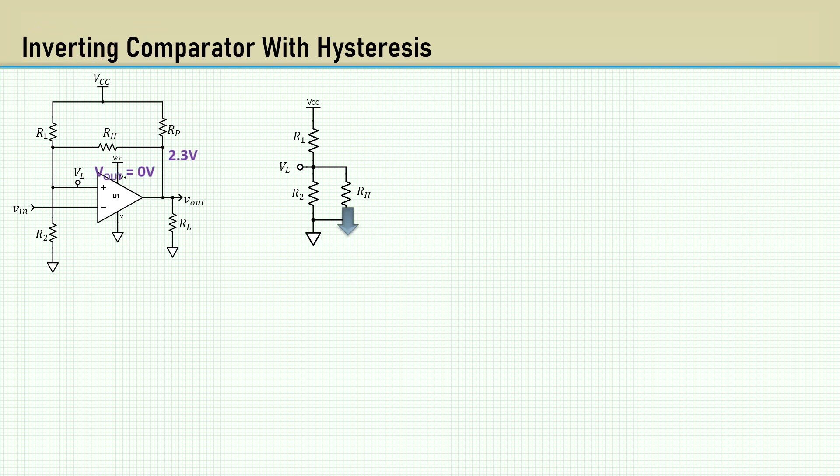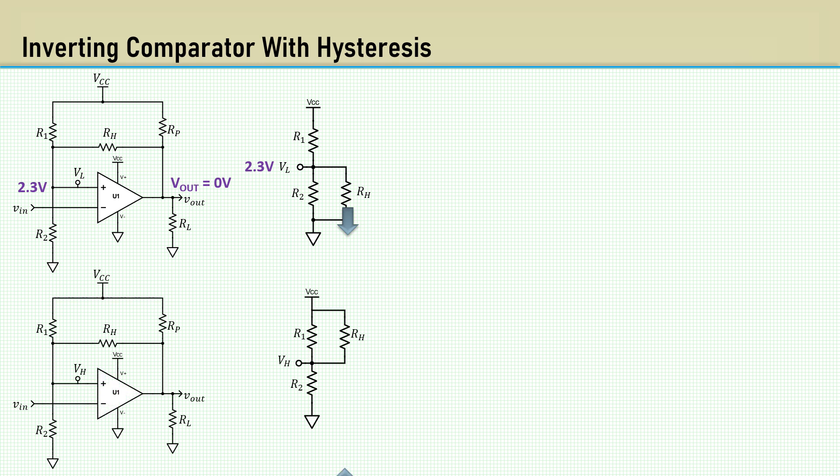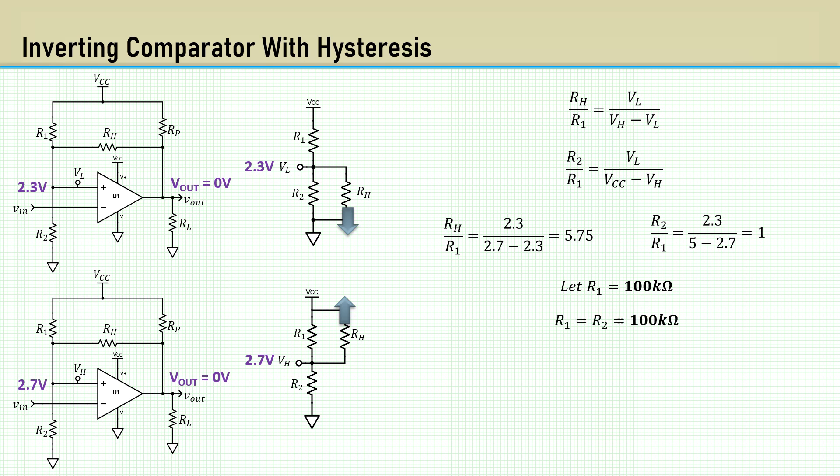Here's a case where the output is low and the low threshold is 2.3 volts. When the output goes high, the threshold voltage is 2.7 volts. These simple formulas can be used to calculate the resistor values. The ratio of RH to R1 is 5.75 and the ratio of R2 to R1 is 1. So let R1 equal 100k and that would make R2 also be 100k. The hysteresis resistor is 5.75 times R1 and comes out to 575k. While it's a very simple approach, these arbitrary resistor selections can be problematic.